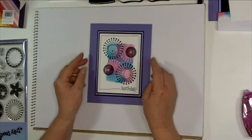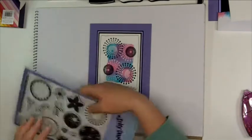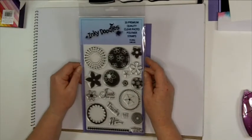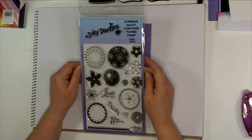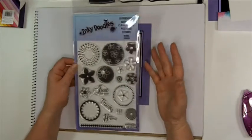Today I'm going to show you how to make a really quick and simple card using our Floral Circles set. That's the Floral Circles set that we have on the website. It's proven to be really popular at the moment. It's great for making backgrounds and also you can use it for focal images as well.